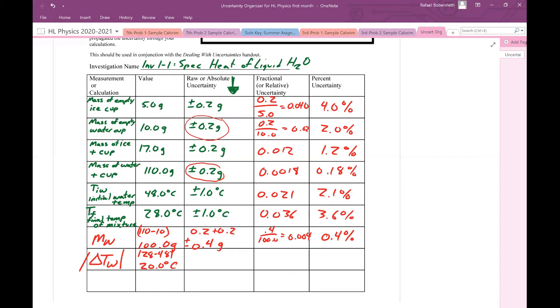So I have to add the raw uncertainty. The raw uncertainty here is 1 degree, and the raw uncertainty here is 1 degree. So that's 1.0 plus 1.0, which equals 2.0. So this would be plus or minus 2.0 degrees Celsius. 2.0 over 20 gives me 0.10, multiply by 100 to get that percent uncertainty of 10.0 percent.